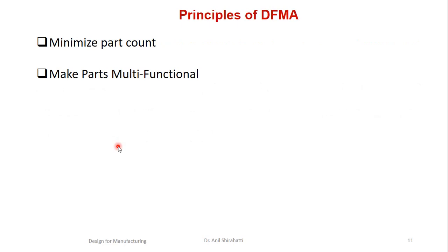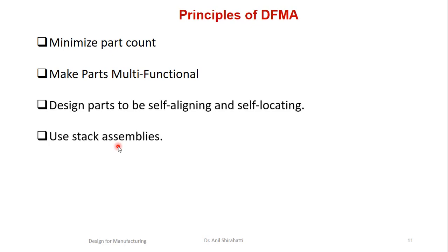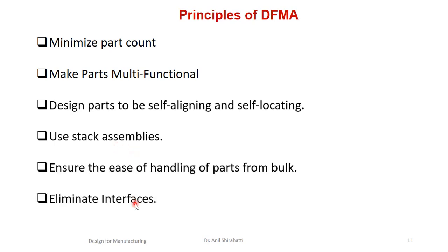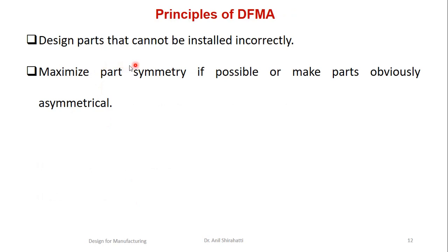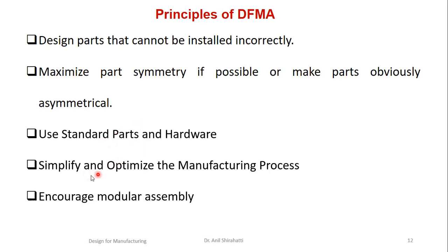Now let's go to the principles of design for manufacture. There are more than 12 principles. I will list them first and then go through each in detail: minimize the number of parts; make parts multifunctional; design parts to be self-aligning and self-locating; use stacking assembly; ensure ease of handling from bulk; eliminate interfaces; design parts that cannot be installed incorrectly; maximize part symmetry if possible; make parts absolutely asymmetrical; use standard parts and hardware; simplify and optimize the manufacturing process; encourage modular assembly.